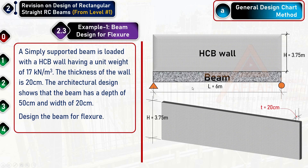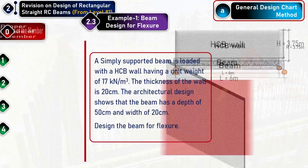There is a simply supported beam of 6 meter length supporting an HDB wall. The unit weight of the wall is 17 kilonewton per meter cubed, the thickness is 20 cm, and the height is 3.75 m. The beam has a depth of 50 cm and width of 20 cm — the same width as the wall. The question requires us to design this beam for flexure.